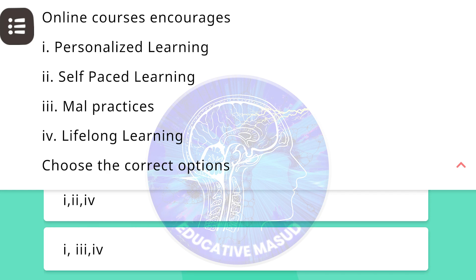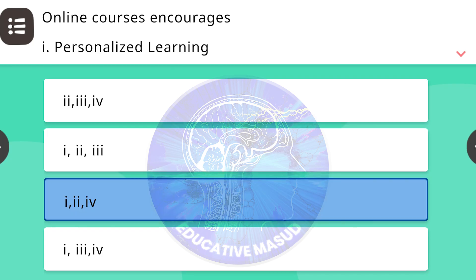Online courses encourage: (1) personalized learning, (2) self-paced learning, (3) malpractices, (4) lifelong learning. Choose the correct options. Correct answer is 1, 2, and 4.